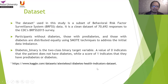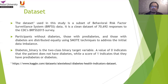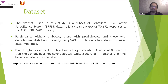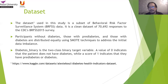For the dataset, we get data from the Behavioral Risk Factor Surveillance System, the BRFSS data. It's a clean dataset and they have collected over 70,000 responses. Participants without diabetes, those with pre-diabetes, and those with diabetes are distributed equally using SMOTE techniques to address initial data imbalance. We don't want any data imbalance to cause biases or unequal variation, so one technique is to ensure they have a very similar or same amount of data.